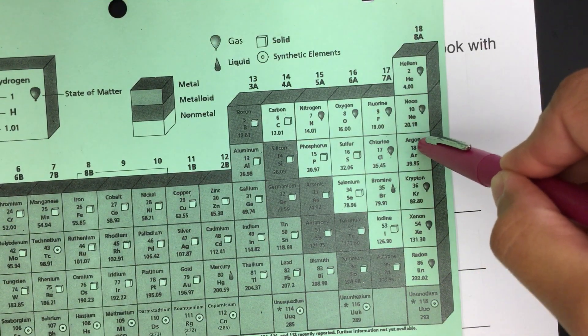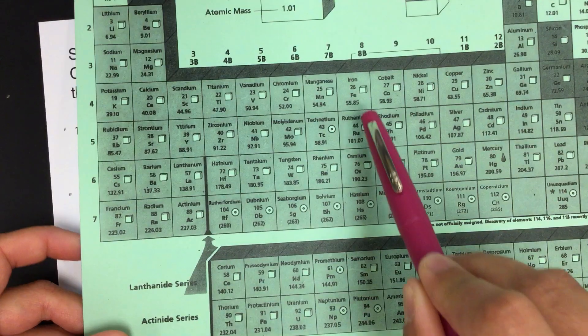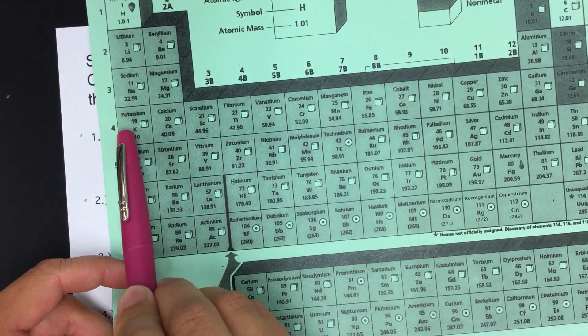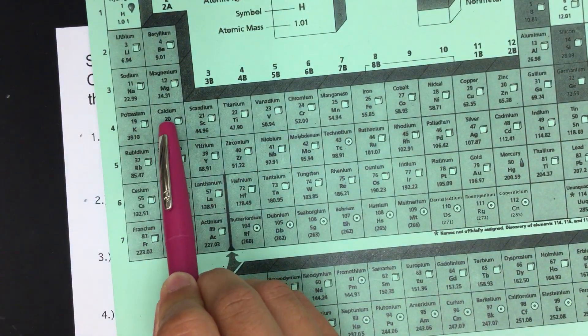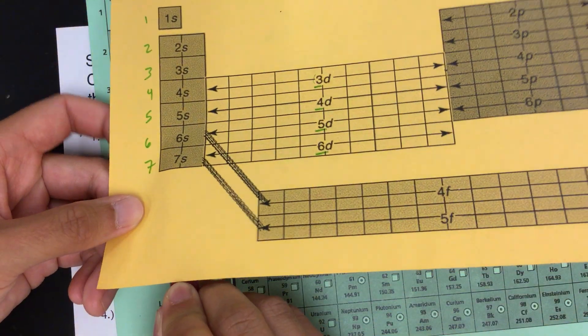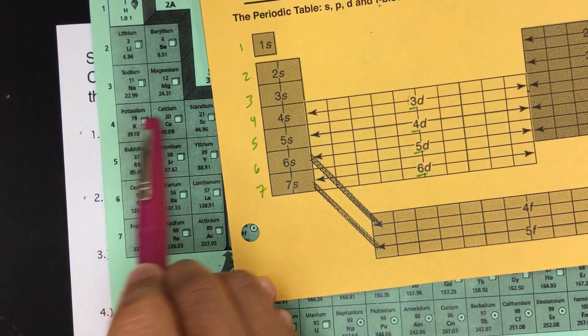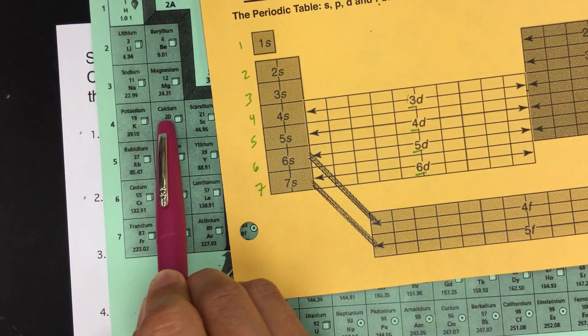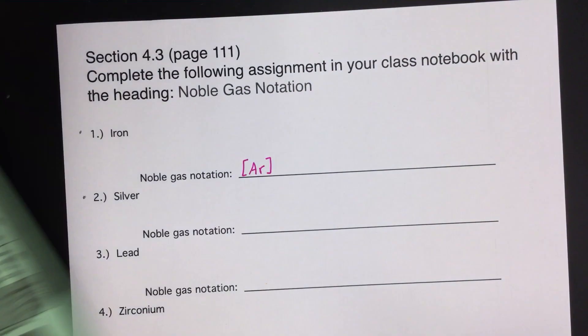But we just have to write argon in brackets. Then once we have that, we need to pick up from this point. So now remember, we're trying to get to iron here. So we need to go here. So if you remember, the way we can use our periodic table, that is 4s, right? So this is the 4s, and it's full. So we're going to do 4s2 as the next part.